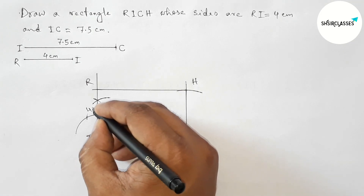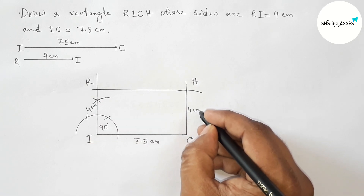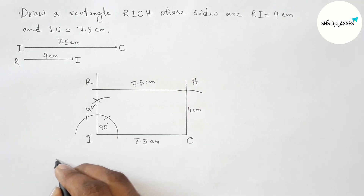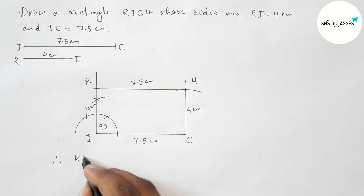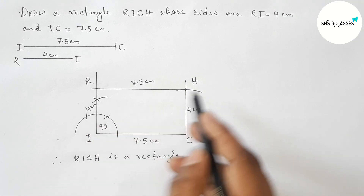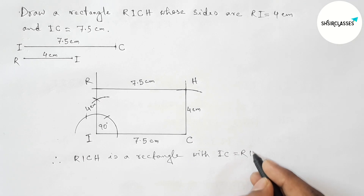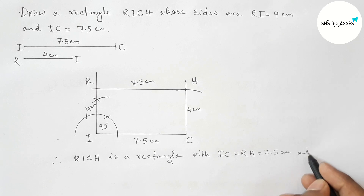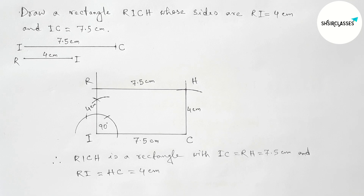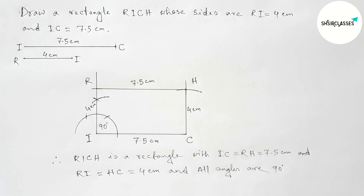This side is 4 centimeters and obviously this one is also 4 centimeters, and this is 7.5 centimeters — both opposite sides are equal. Therefore, RICH is a rectangle where IC equals RH, both equal and opposite, and RI equals HC equal to 4 centimeters. All angles of a rectangle are 90 degrees. That's all, thanks for watching.